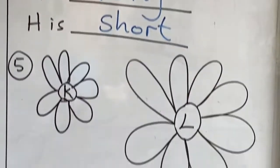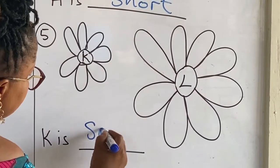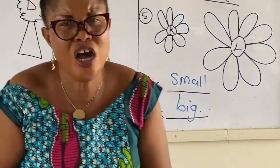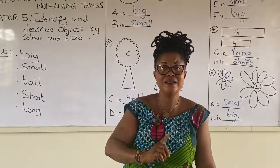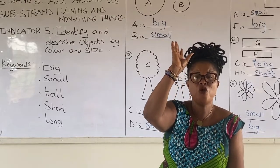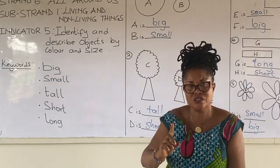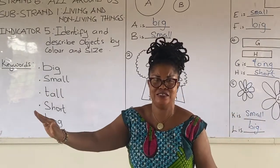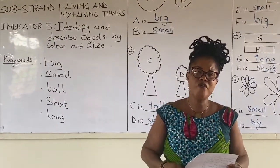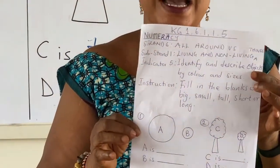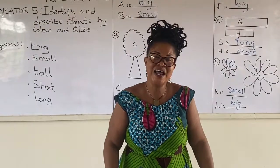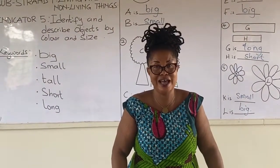Now let's compare these two flowers: K is small, L is big. So kids, note the difference: when two objects are standing upright, we compare using tall and short. When two objects are lying flat, we compare using long and short. In today's tutorial, I will provide this exercise to download and answer. Subscribe to our YouTube channel. Our next tutorial will be in a few days. Bye-bye!